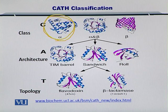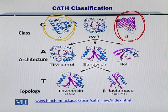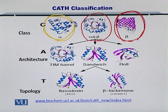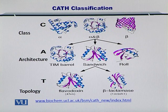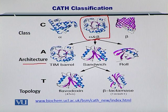There can be alpha domains, there can be beta domains, and there can be alpha and beta combined — alpha plus beta, alpha over beta, and so on. As an example, I am going to show you how alpha and beta can be classified into an architecture.